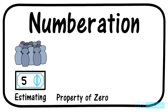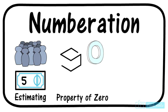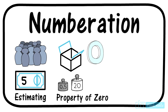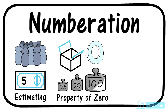Understanding the value and properties of the number zero is also very important. Students should know that zero means nothing — like when a box is empty, there is nothing in it. They should also recognize how zero is used with respect to place value. Take a look at these three examples and notice the different meanings of zero.